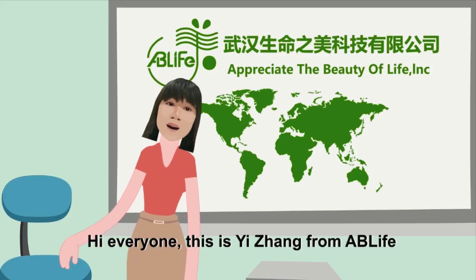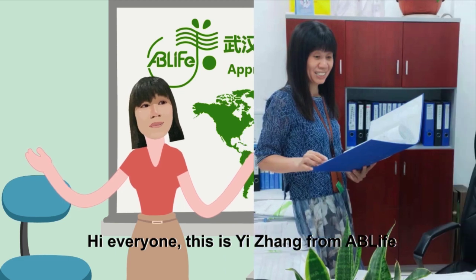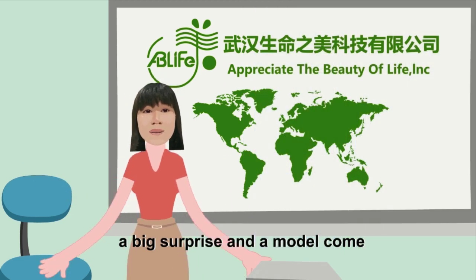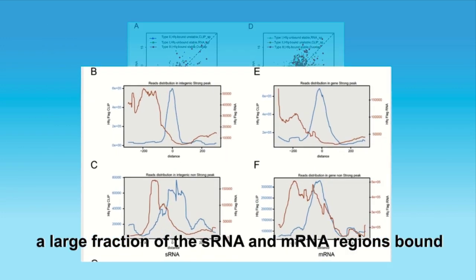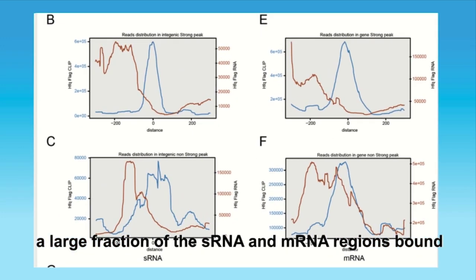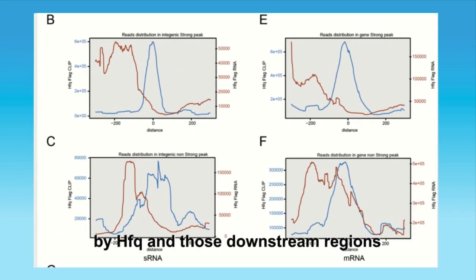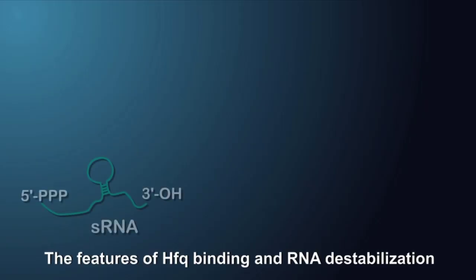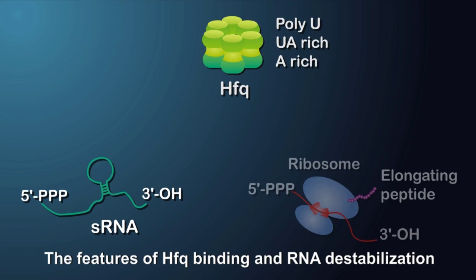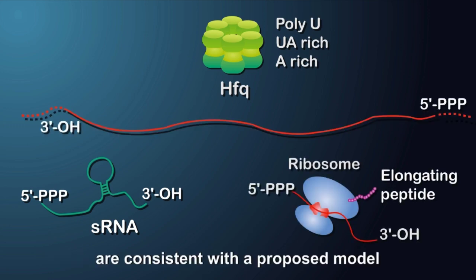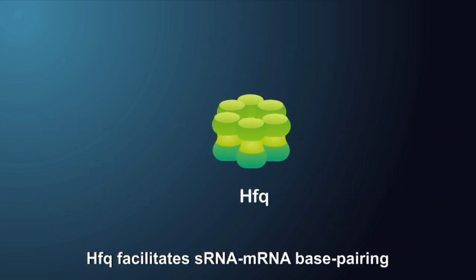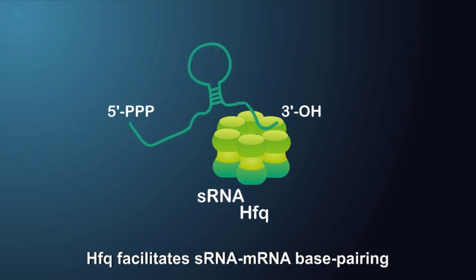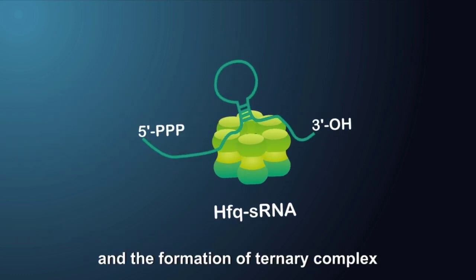Hi everyone, this is Yizha from AB Life. Now a big surprise and model emerge. As we see from the figure, a large fraction of sRNA and mRNA regions bound by HFQ and those downstream regions are destabilized. The features of HFQ binding and RNA destabilization are consistent with the proposed model. HFQ facilitates sRNA and mRNA base-pairing and the formation of the ternary complex.